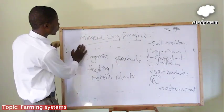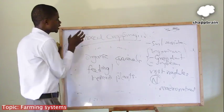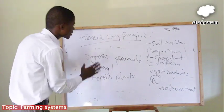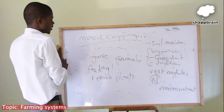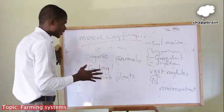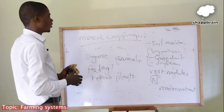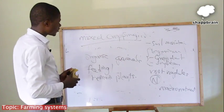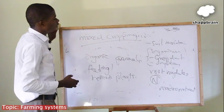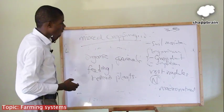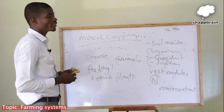The difference between mixed cropping and mixed farming is that for mixed cropping, the farmer farms different types of crops on the same piece of land, but for mixed farming, the farmer farms crops and animals on the same piece of land. Thank you very much for joining us in this session. We look forward to having the next session with you. Take care.